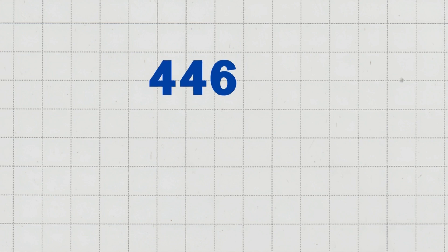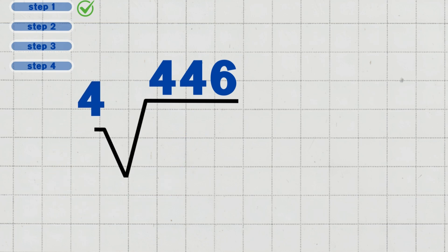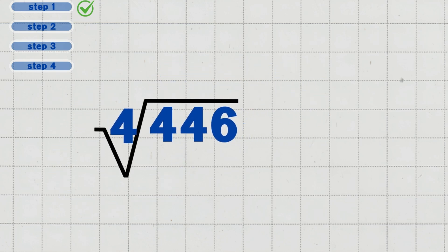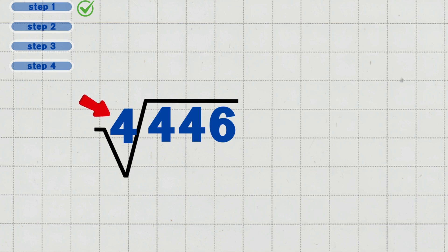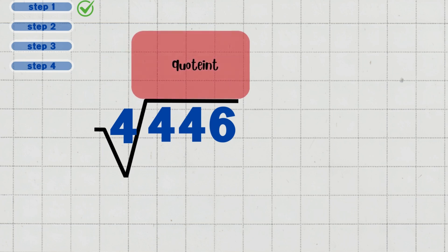Let's solve four hundred and forty-six divided by four. Step one: set up the problem. Write four hundred and forty-six divided by four in long division form. Four is the divisor, the number we divide by. Four hundred and forty-six is the dividend, the number being divided. The answer we get is called the quotient.